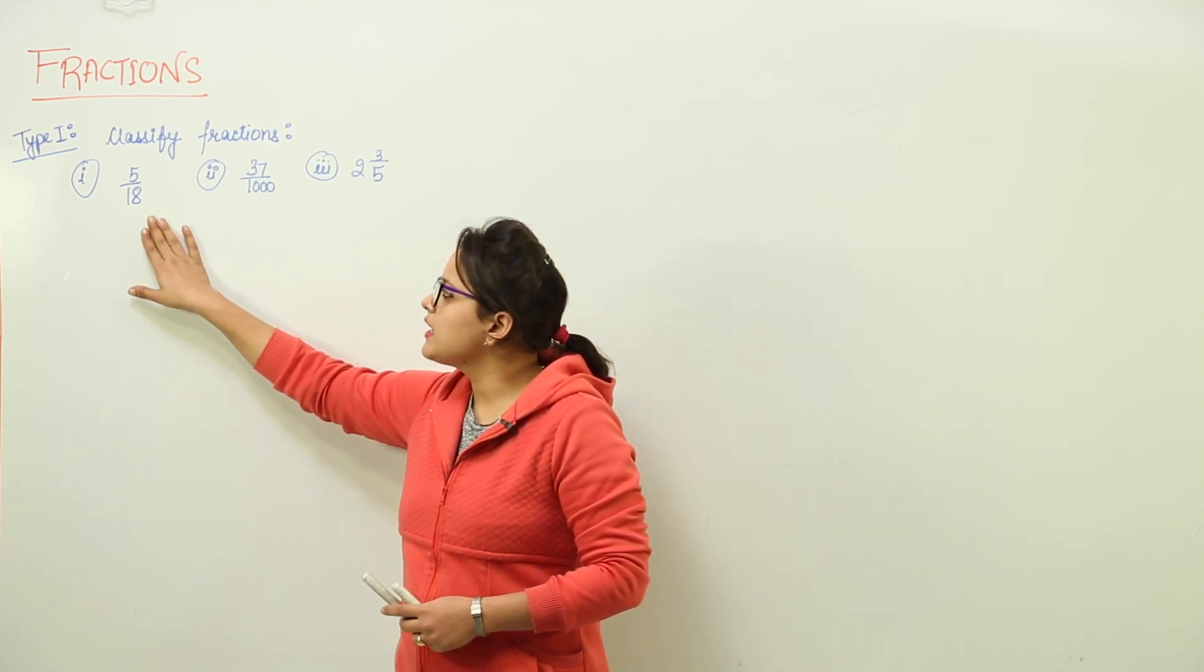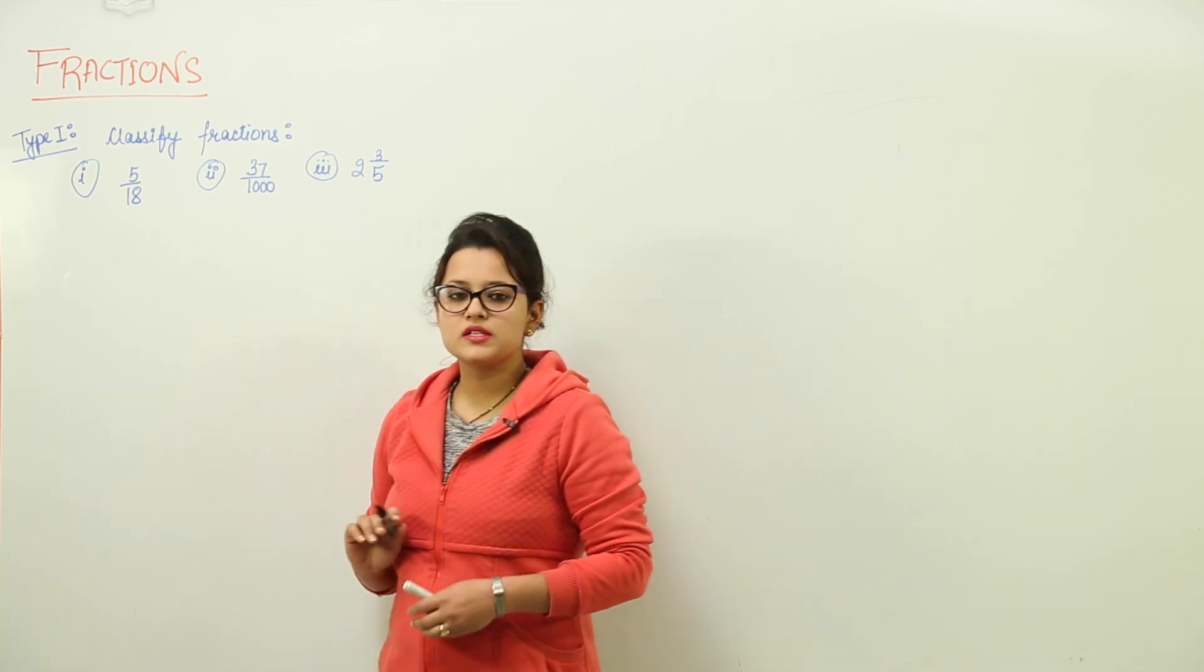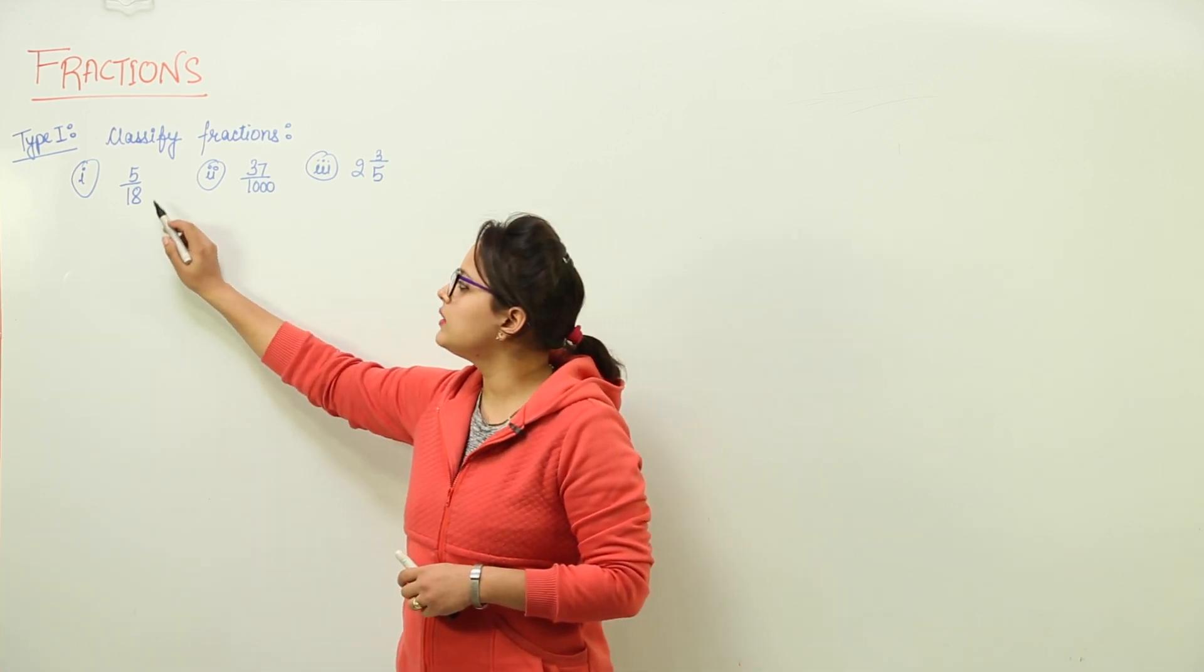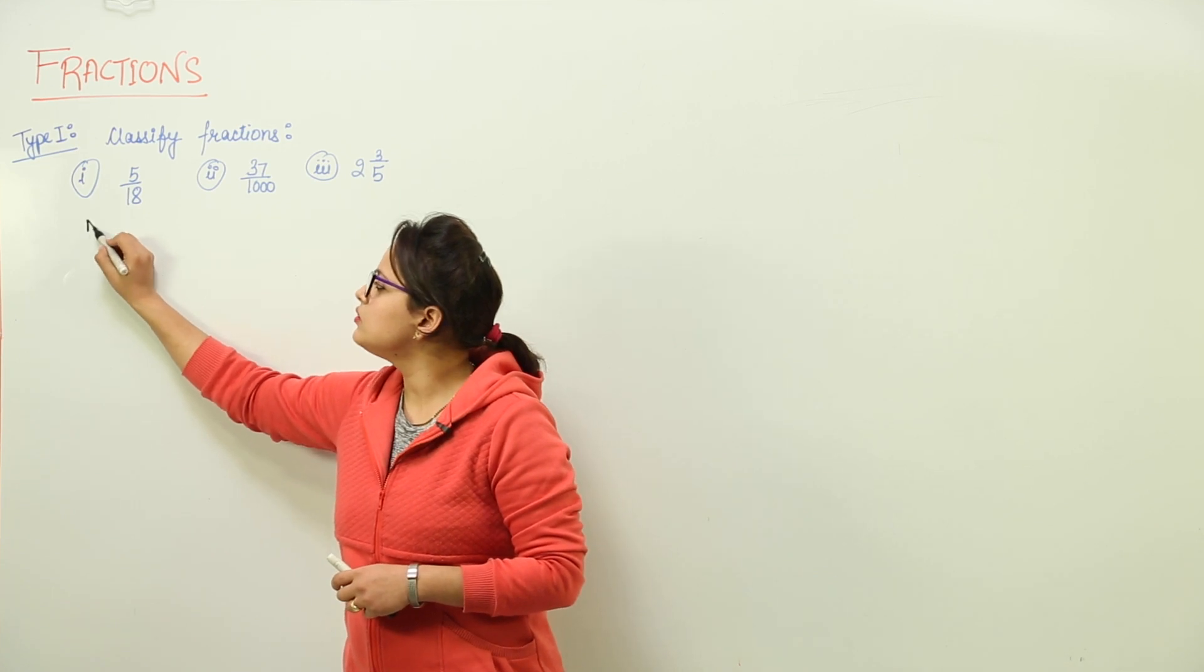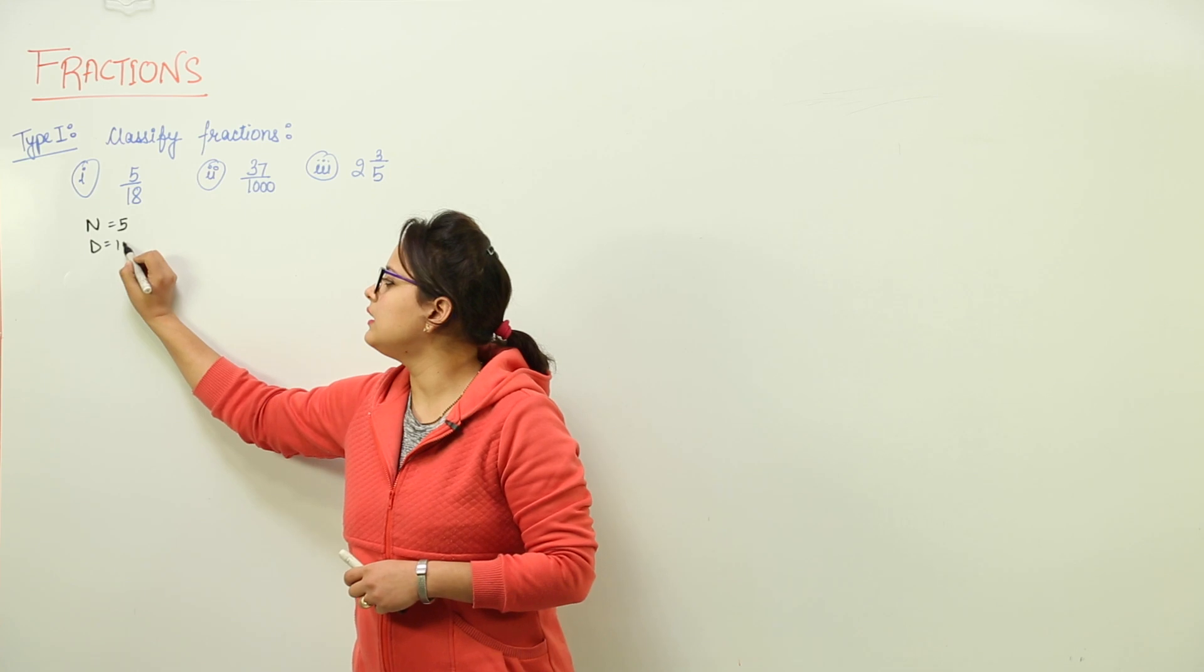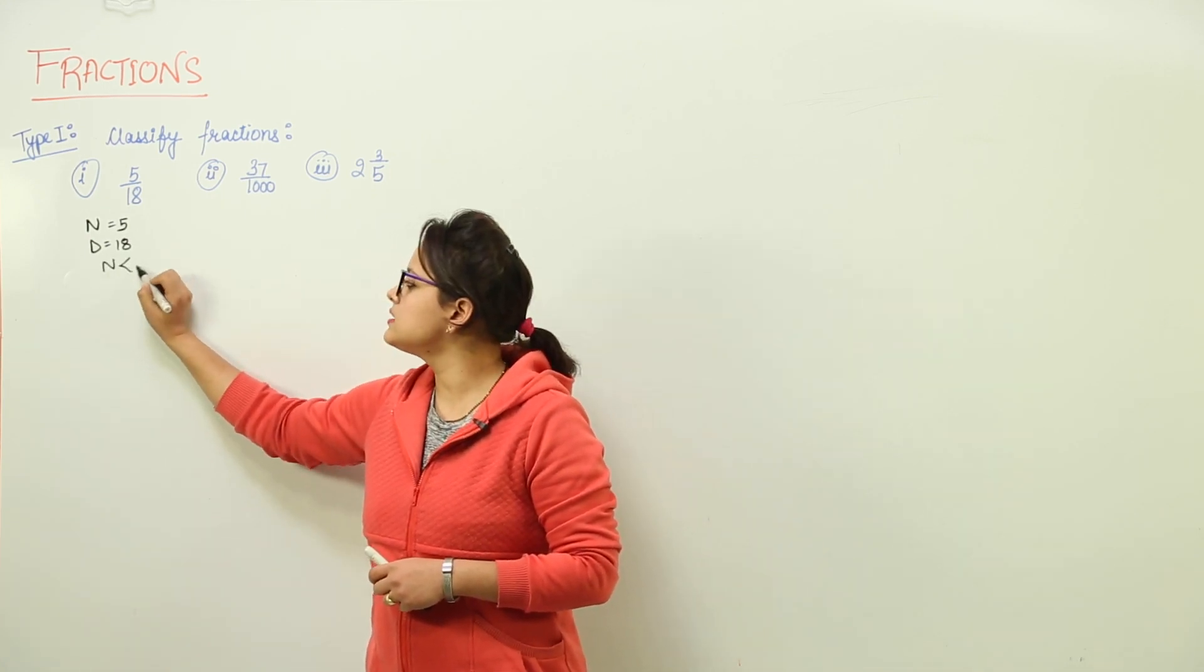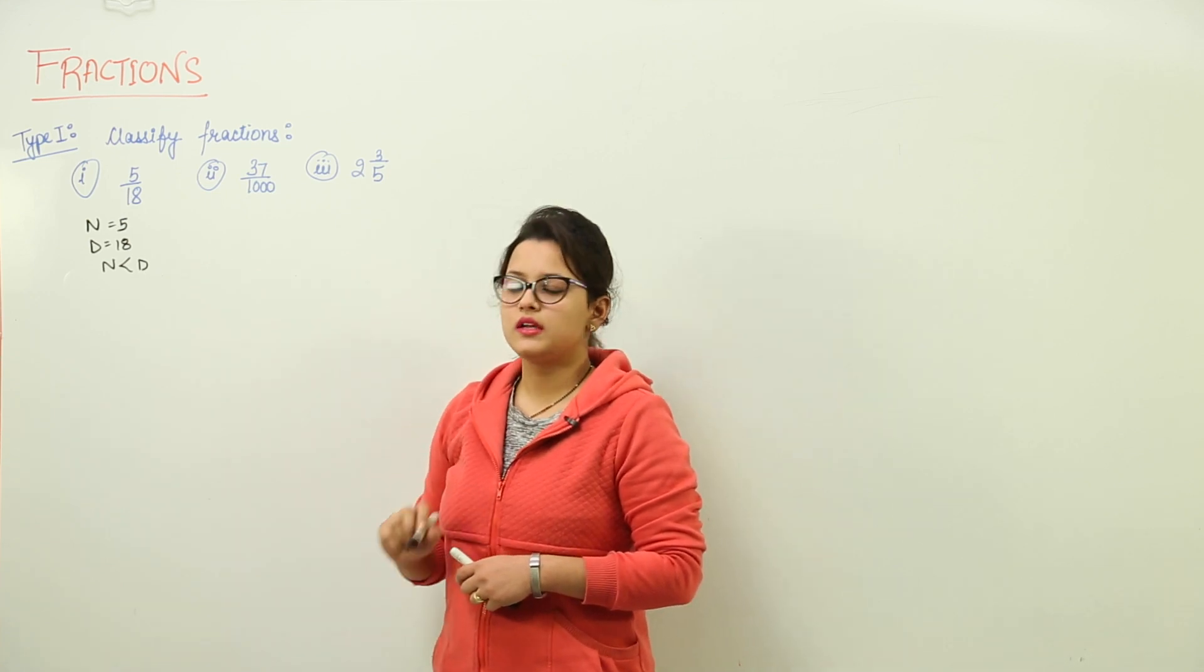Okay, the first one is 5 upon 18. This is a fraction that has a denominator and a numerator. Here the numerator is 5 and the denominator is 18. We can clearly see that the numerator is less than the denominator.